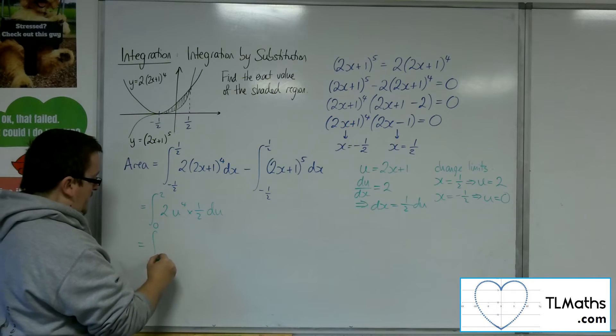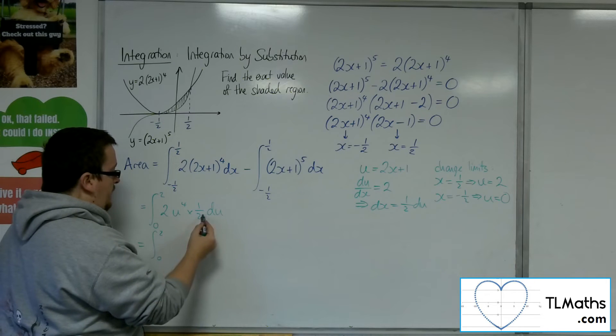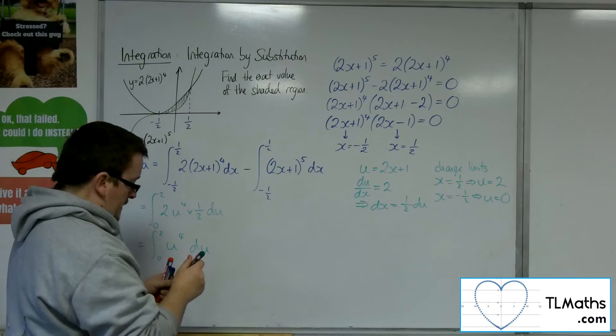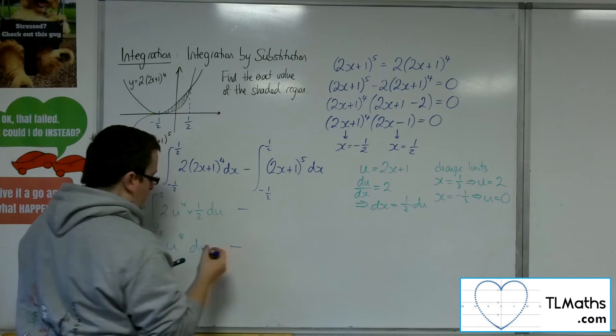So I can safely say that this integrates between 0 to 2. The 2 and the half cancel. U to the 4 du. So that would be the first integral dealt with.